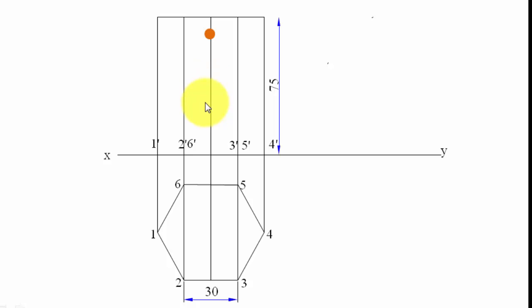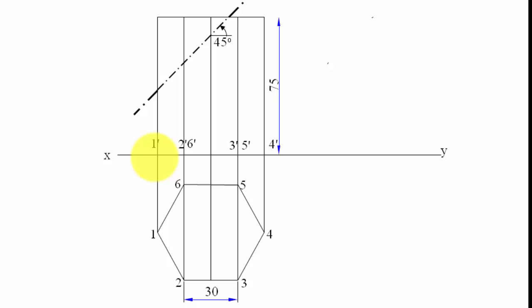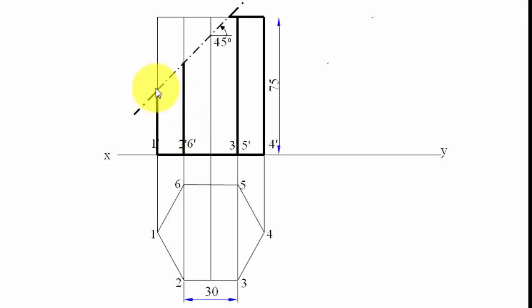The cutting plane passes through a point on the axis at a distance of 10 mm below the top. We draw the cutting plane at 45 degrees. The portion of the solid that falls below this cutting plane is darkened. The cutting plane inside the solid is shown as a thin dash-dot line, and outside the solid as a thick dash-dot line.